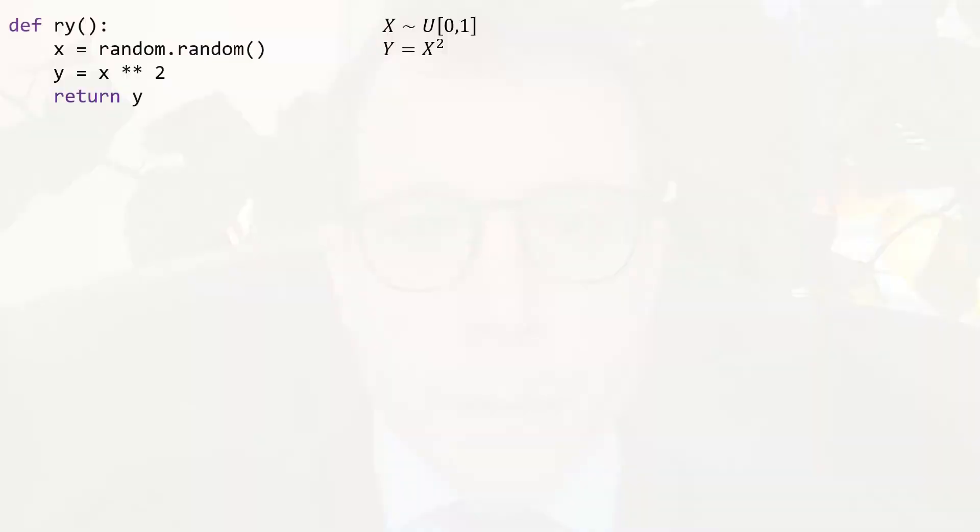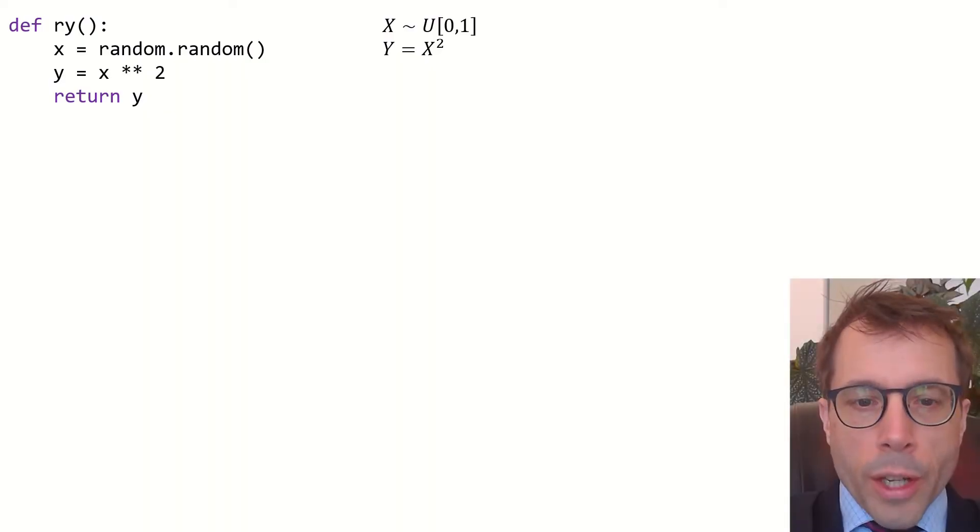Let's start with a simple example. First, when you write U, that just means the standard uniform distribution between 0 and 1, all values equally likely. The special symbol tilde means generate or sample X from the uniform distribution.